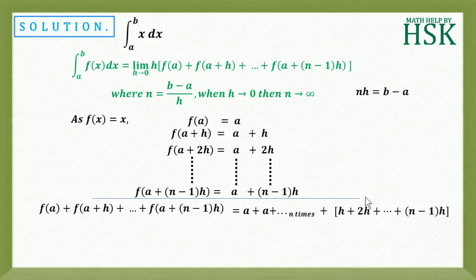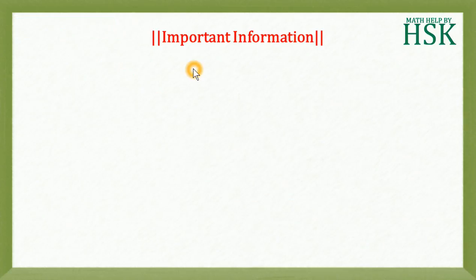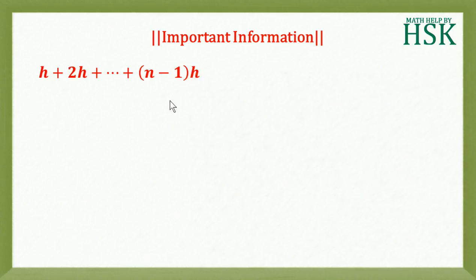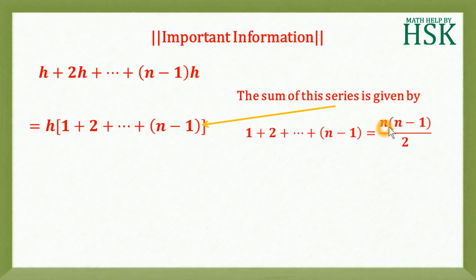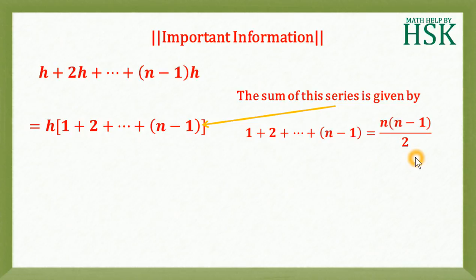To solve h + 2h + ... + (n-1)h, we factor out h to get h × (1 + 2 + ... + (n-1)). We know from arithmetic progression that 1 + 2 + ... + (n-1) = n(n-1)/2, recalling that sigma n = n(n+1)/2, so one term less gives n(n-1)/2.